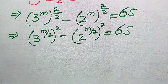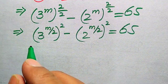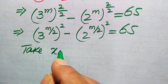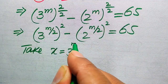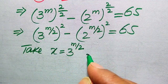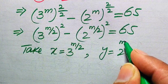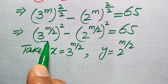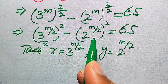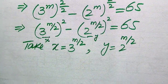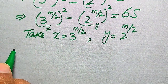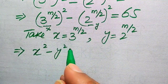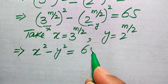For this we take x equals 3 to the power of m over 2, and y equals 2 to the power of m over 2. This means the base of the first term is x and the base of the second term is y. After this substitution, we write our equation as x squared minus y squared equals 65.